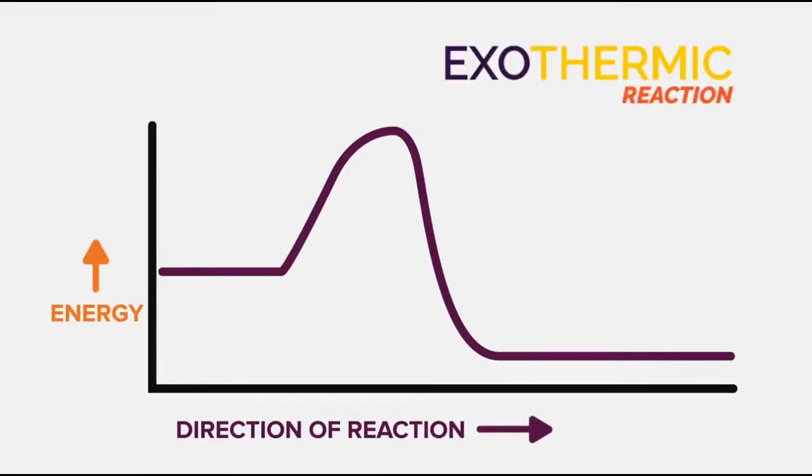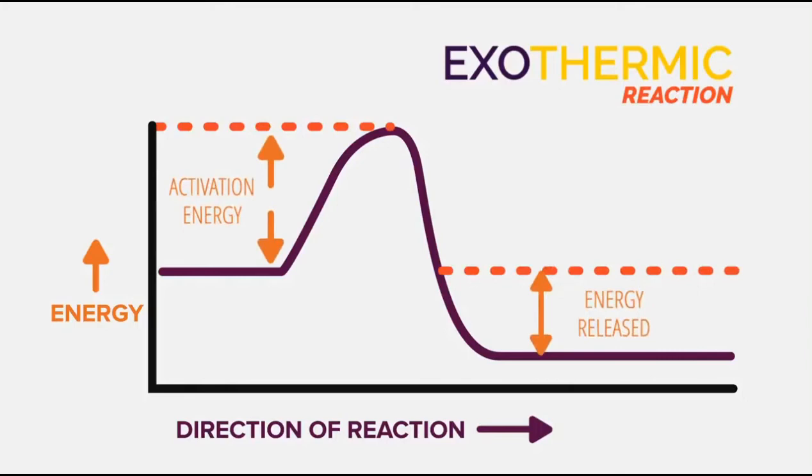Because in exothermic reactions, energy is given out to the surroundings, this means that energy of the reactants is higher, and the energy of the products lower, hence the energy curve for the exothermic reactions will look like this.